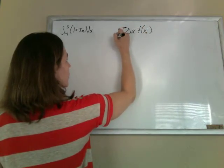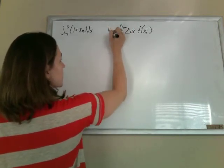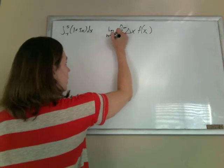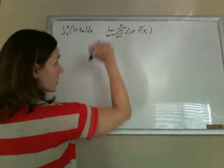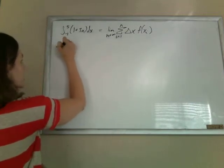We're going to add up all the rectangles, starting with the first rectangle and going to the nth rectangle. The more rectangles we have, the better our approximation is, so we're going to take an infinite number of rectangles. We're going to find all the pieces.